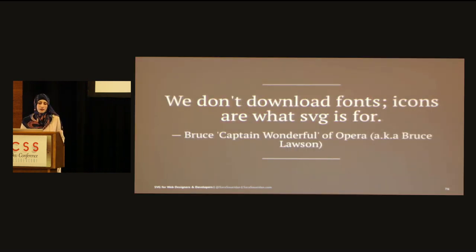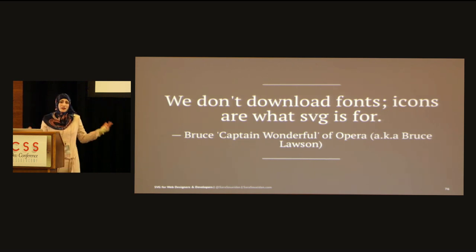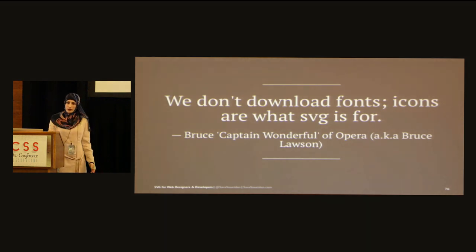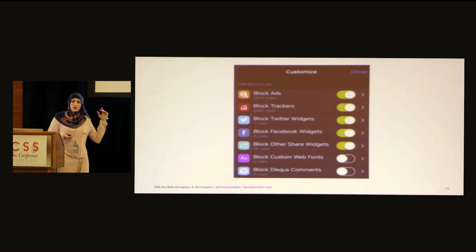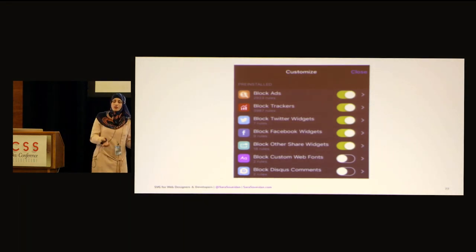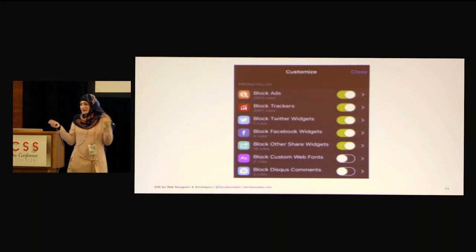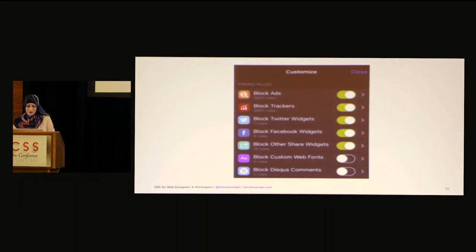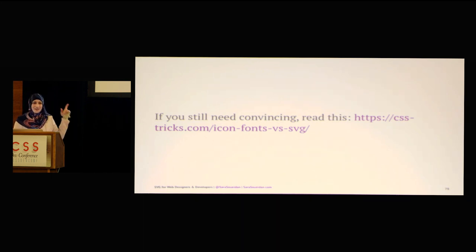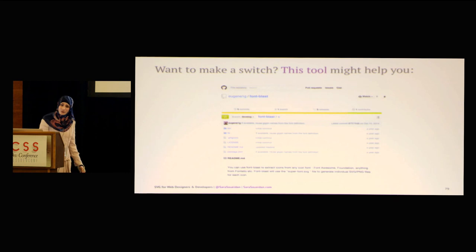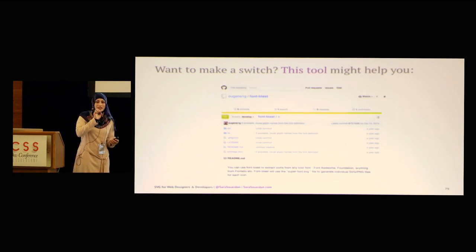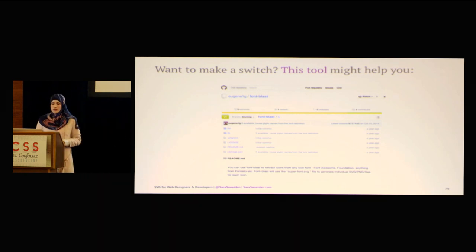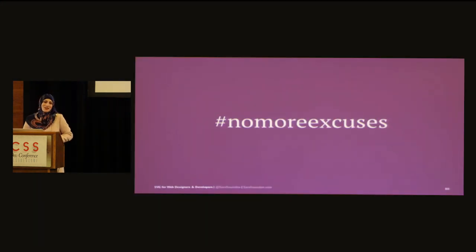Icon fonts have other problems too. Opera Mini doesn't download icon fonts — icons are what SVG is for, so Opera Mini just doesn't download your icon fonts. Bruce Lawson, who works for Opera, confirmed this. And with ad blockers and content blockers, if your user blocks your fonts, they block your icons and end up with little rectangles. Even without an ad blocker, on a slow connection I always see those blank rectangles — it's incredibly infuriating. There's also a tool that helps you extract SVG icons from your icon fonts, no matter what font you're using, so there's really no excuse not to use SVG today.